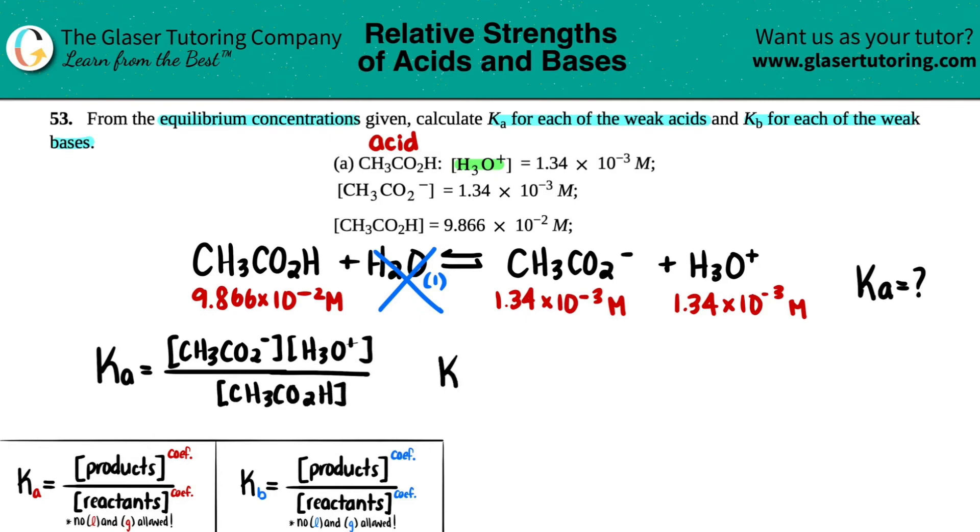Let's put in some actual numbers. So I'll just put the brackets first. So the acetate was the 1.34 times 10 to the negative 3. Same thing goes for this one, 1.34 times 10 to the negative 3. And then this one is 9.866 times 10 to the negative 2nd.